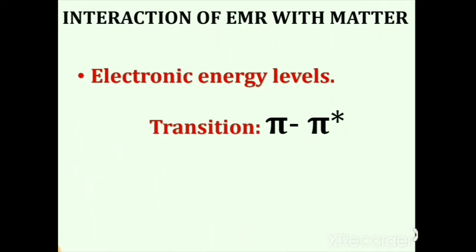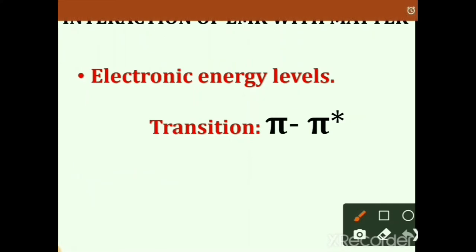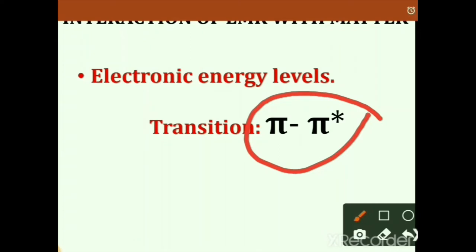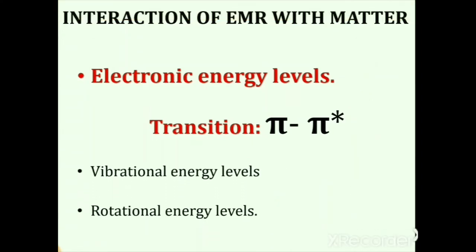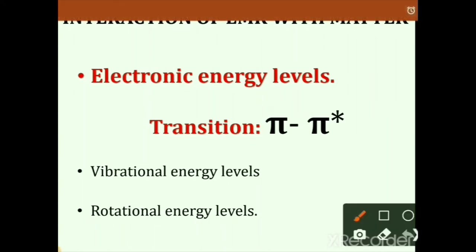When electromagnetic radiation interacts with matter, it causes transitions. In UV-Vis spectroscopy, the main transition is π→π*, which is why it is used for detection of unsaturation. There are different types of energy levels: electronic, vibrational, and rotational. In UV-Vis spectroscopy, the main energy level involved is the electronic energy level, and it is based on electronic transitions.